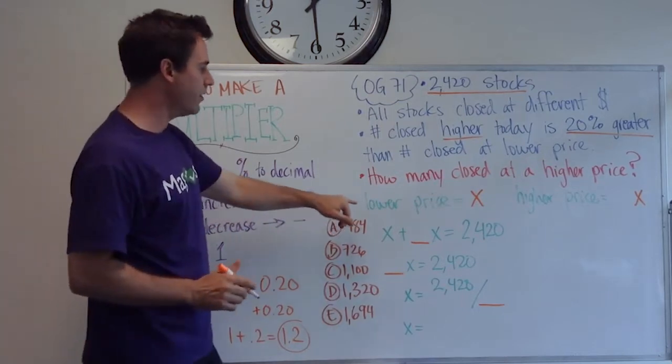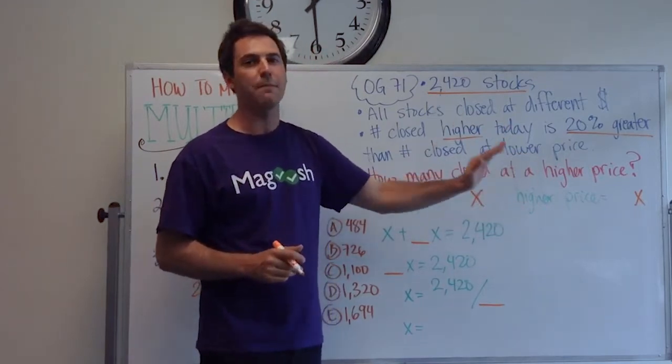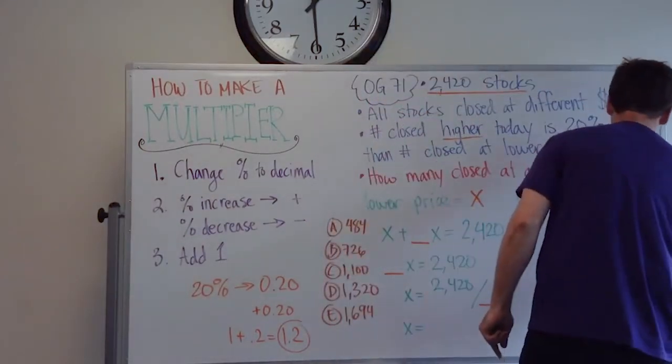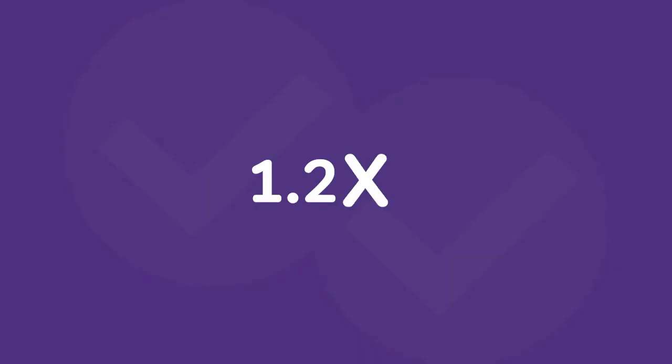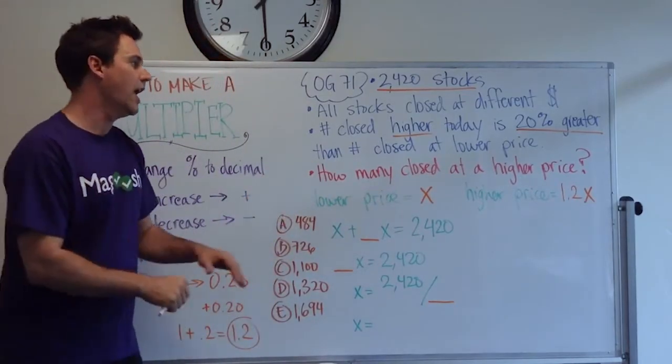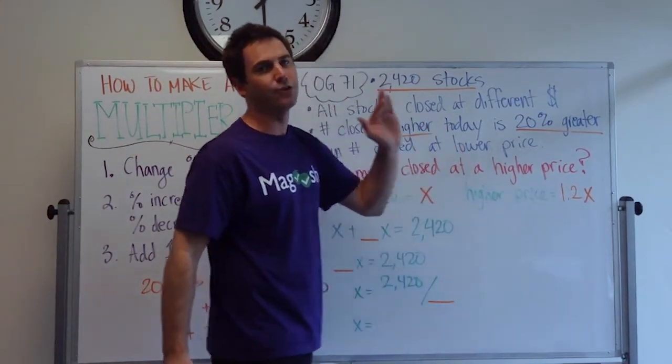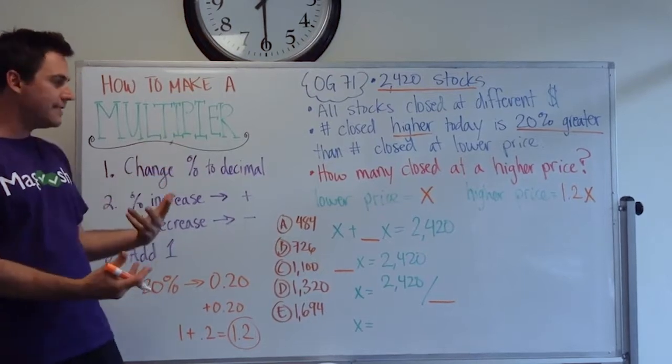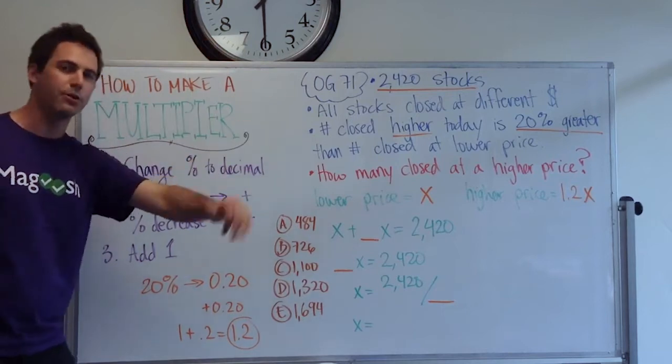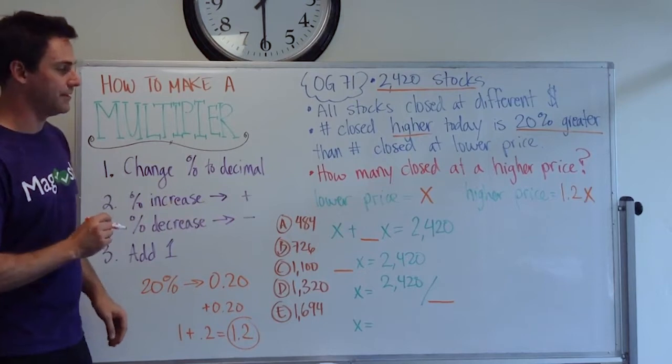So what we're working with here is the lower price is X. The higher price is 20% more than X. So all we have to do is put 1.2 in front of our X. And that's our multiplier because X is 100% of the lower price. And we know the higher price is 20% more than that. So the multiplier is representing that for us. It makes it a lot easier to solve this problem instead of having to deal with percents and putting a number over 100 and then you have fractions.